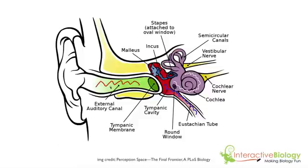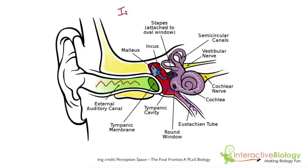Think about it this way. If you're running in air, that is not as hard as if you're trying to run in water. So in order for us to have the same strength of signal out here and in the fluid inside the cochlea, something needs to happen. And that process is called impedance matching.